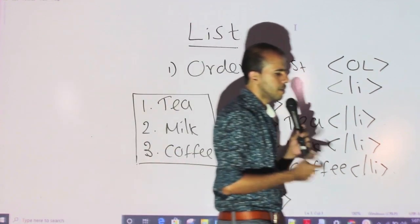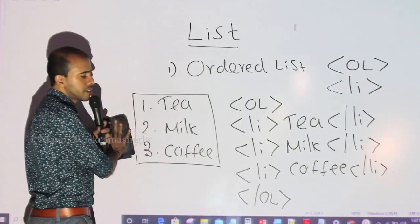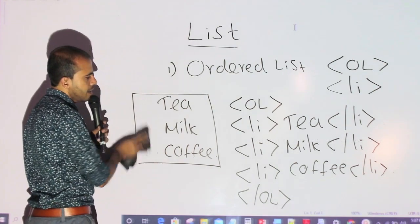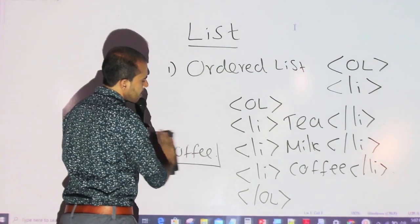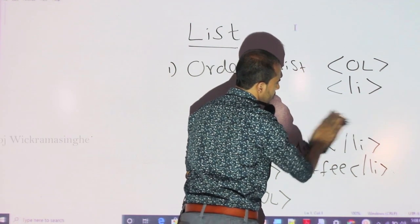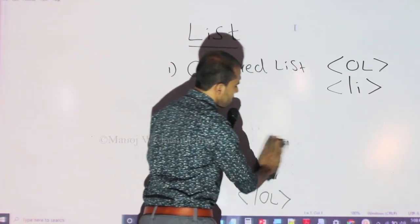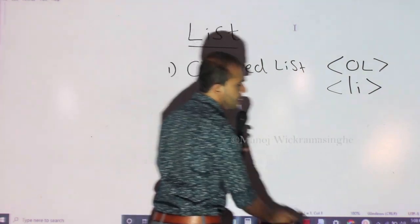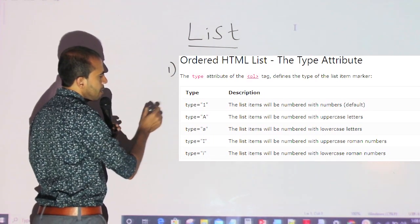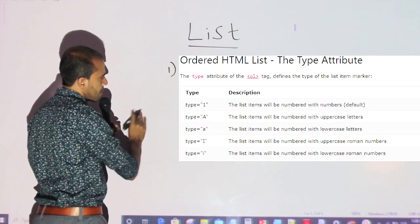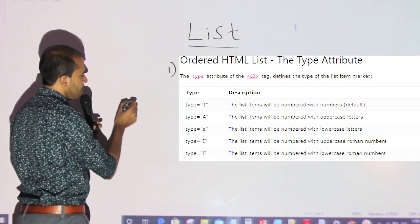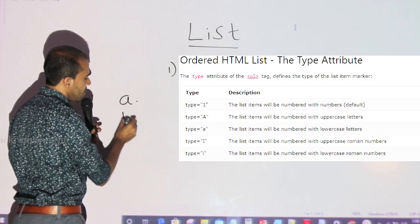If you ask questions, you can click the HTML code. Now, if you click the HTML code, you can click the HTML code strongly. If you click the HTML code, you can click the HTML code. There is an old text. The list is simple.